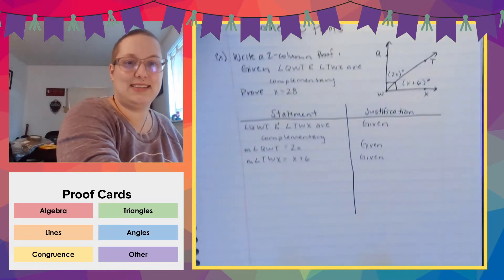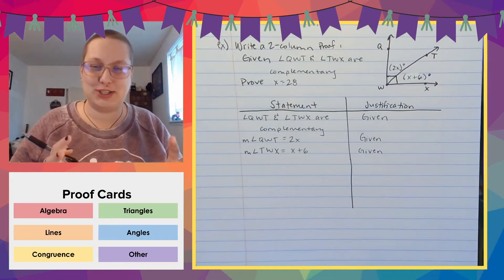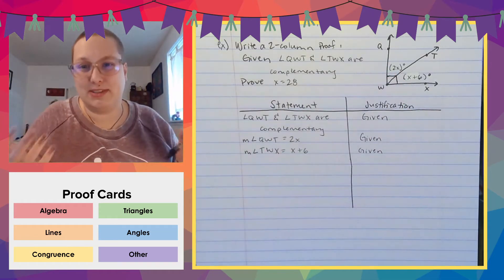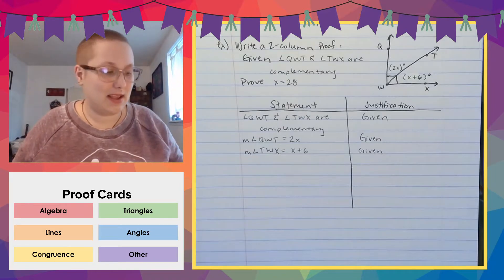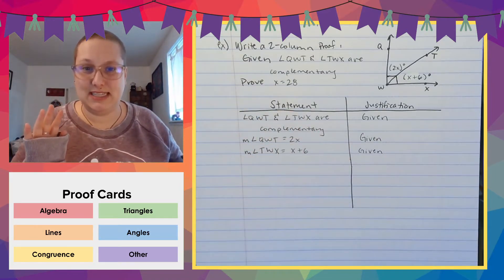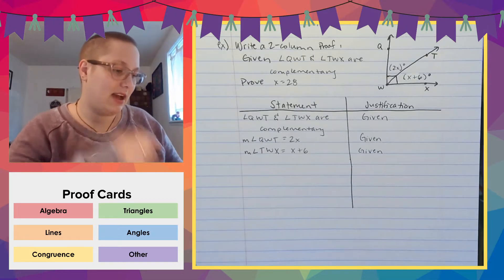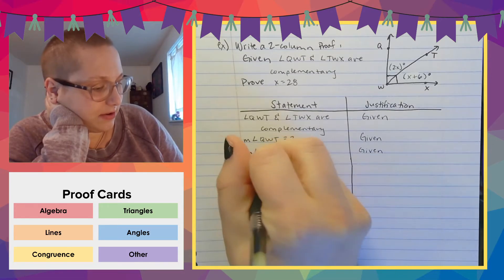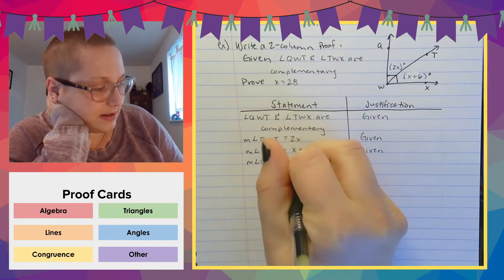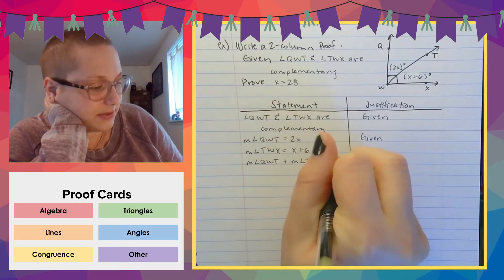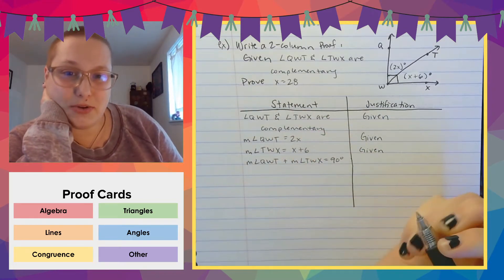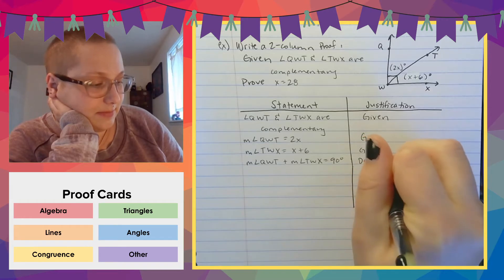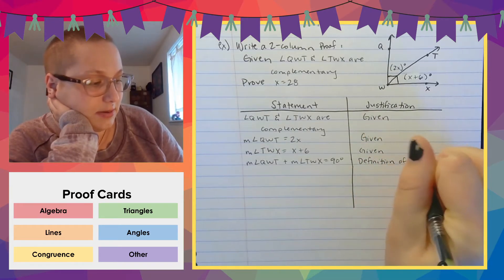All right. So next, I need to set up some sort of equation and we know by solving these so much, hopefully we know that 2X plus X plus 6 equals 90. We know that that's the case, but it doesn't say 90 anywhere in this statement. So we need to say that it equals 90. How do we do that? Well, we know that the measure of angle QWT plus the measure of angle TWX equals 90 degrees. How do we know that? We know that because they're complementary.